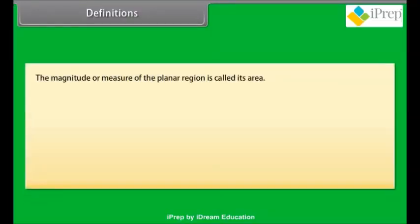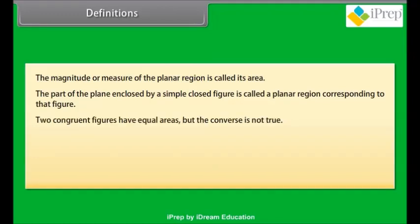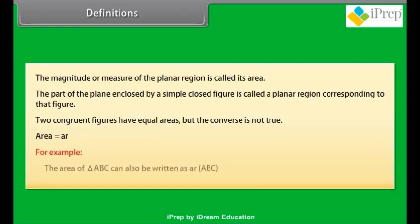Students, the magnitude or measure of the planar region is called its area. The part of the plane enclosed by a simple closed figure is called a planar region corresponding to that figure. Two congruent figures have equal areas but the converse is not true. The area of a figure can also be denoted by AR. For example, area of triangle ABC can also be written as AR(ABC).